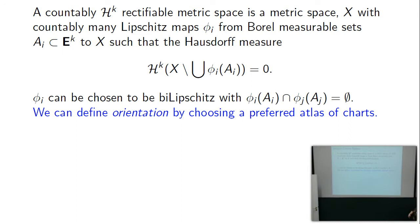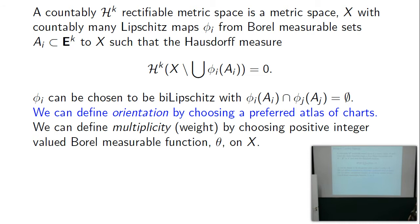We choose an orientation by specifying a preferred atlas of charts — if the charts overlap, the determinant of the transition (which is defined even for Lipschitz maps) must be positive. We define multiplicity or weight by choosing a positive integer-valued Borel-measurable function theta on X, which means pulling it back via the phi_i it's Borel-measurable on the A_i.